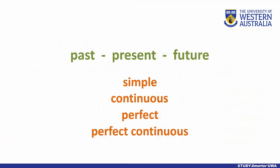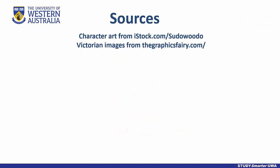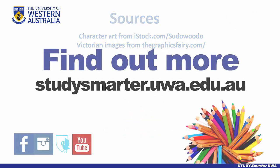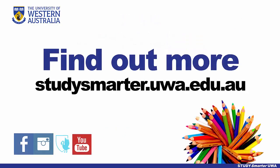There we go. Each tense has four potential aspects: simple, continuous, perfect, and perfect continuous. Thank you for watching, and look out for more Grammar School videos by StudySmarter.